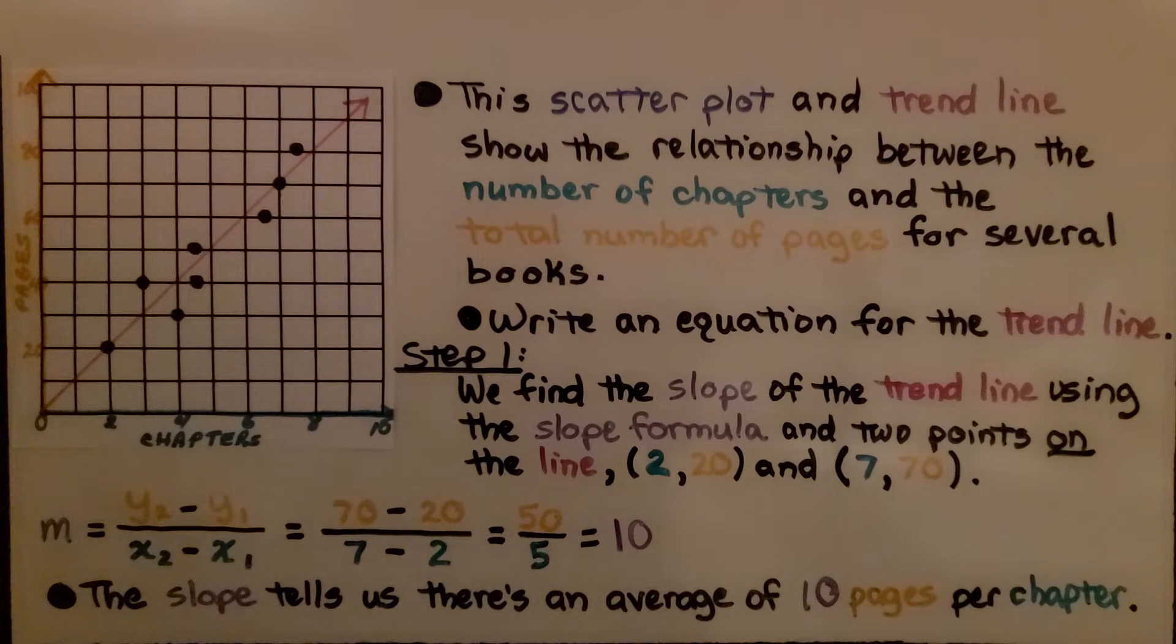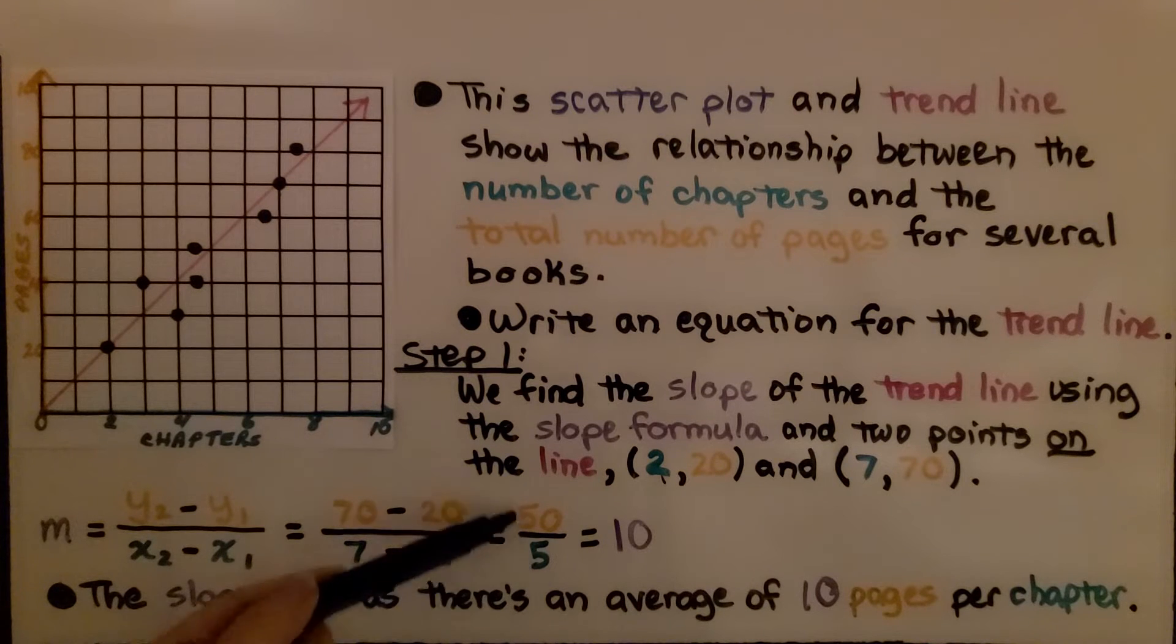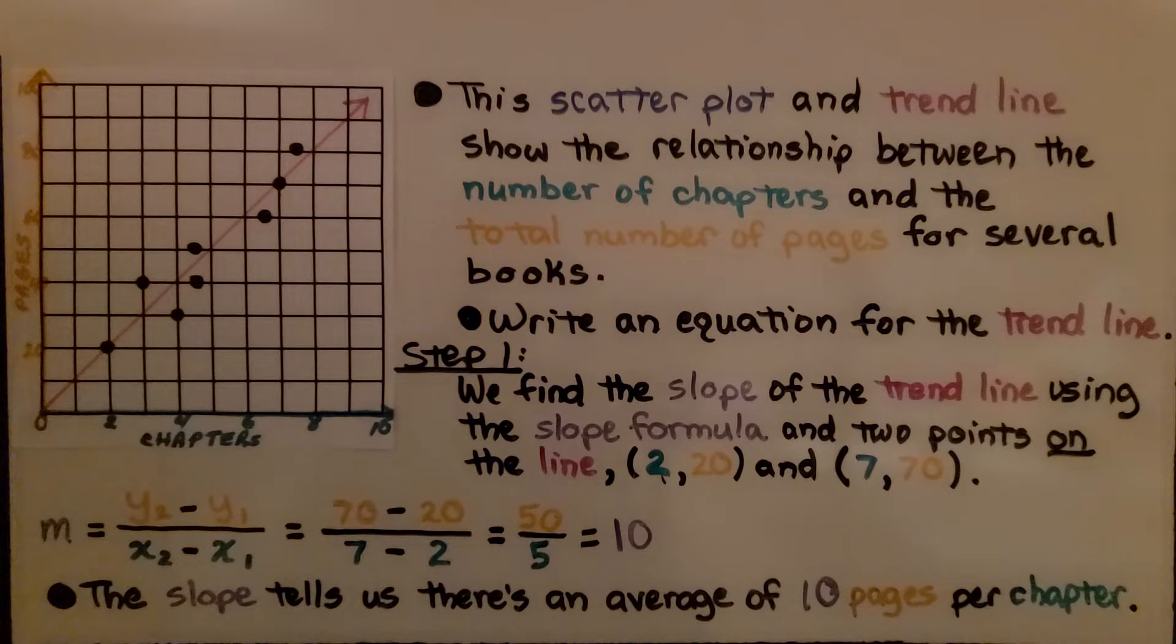We use the slope formula. The slope is equal to the second y value minus the first y value divided by the second x value minus the first x value. So we have 70 minus 20 and 7 minus 2. That gives us 50 over 5 and we simplify it to 10. The slope tells us there's an average of 10 pages per chapter.